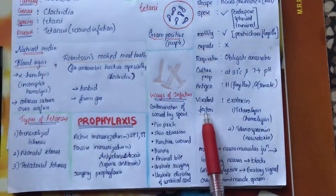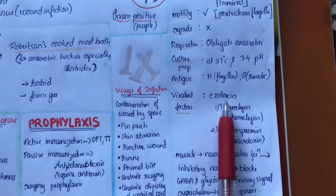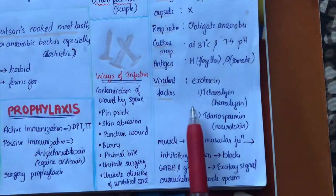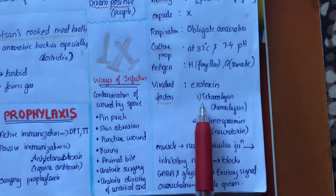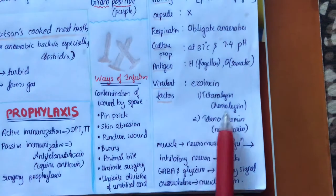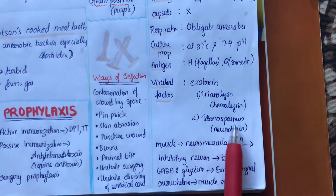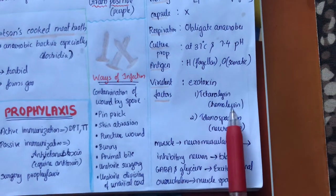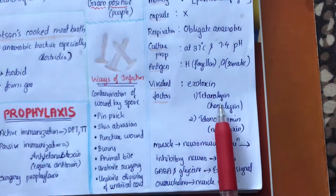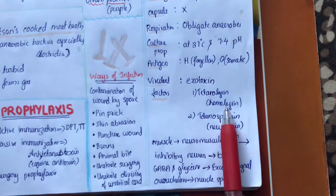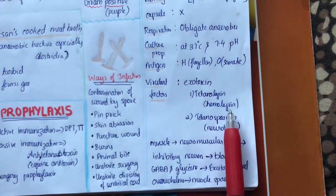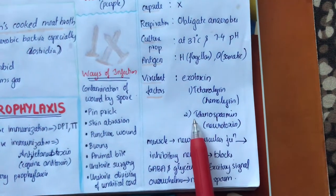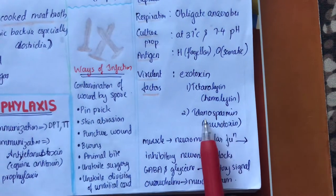The main virulent factor is exotoxin. There are mainly two types of exotoxin: tetanolysin and tetanospasmin. Tetanolysin is otherwise known as hemolysin because it causes hemolysis, or the destruction of blood cells. And the other one is the tetanospasmin.